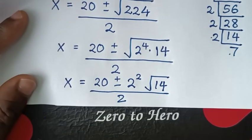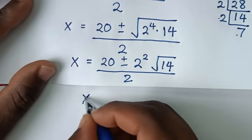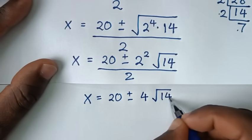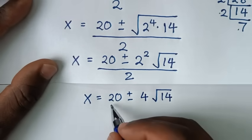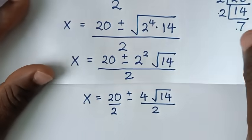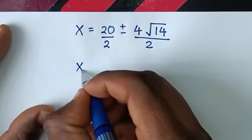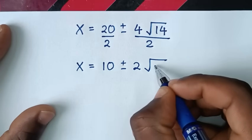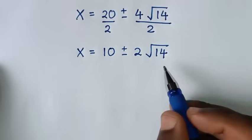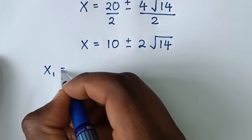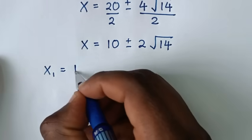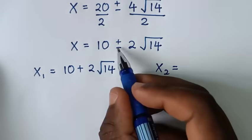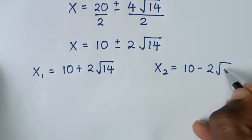So x equals 20 plus or minus 4 times square root of 14, all over 2. Dividing both terms by 2: x equals 10 plus or minus 2 square root of 14. Therefore the two values of x are: x1 equals 10 plus 2 square root of 14, and x2 equals 10 minus 2 square root of 14.